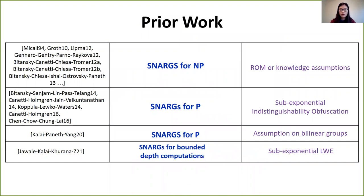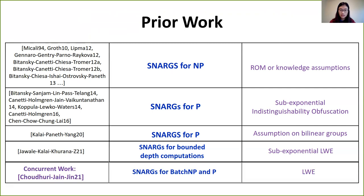There has been a lot of work on constructing SNARGs. For a long time, efforts were directed at constructing SNARGs for NP, done only under strong assumptions such as the random oracle model or knowledge assumptions. More recently, there have been efforts towards SNARGs for deterministic languages. For P, constructions exist under sub-exponential IO or under assumptions on bilinear groups. Recently, a work constructed SNARGs for bounded-depth computations based on sub-exponential LWE. There is also a concurrent work by Chad, Hurley, Jade, and Jin, which constructs SNARGs for batch NP and P under LWE. In our work, we investigate the connection between SNARGs for batch NP and P.